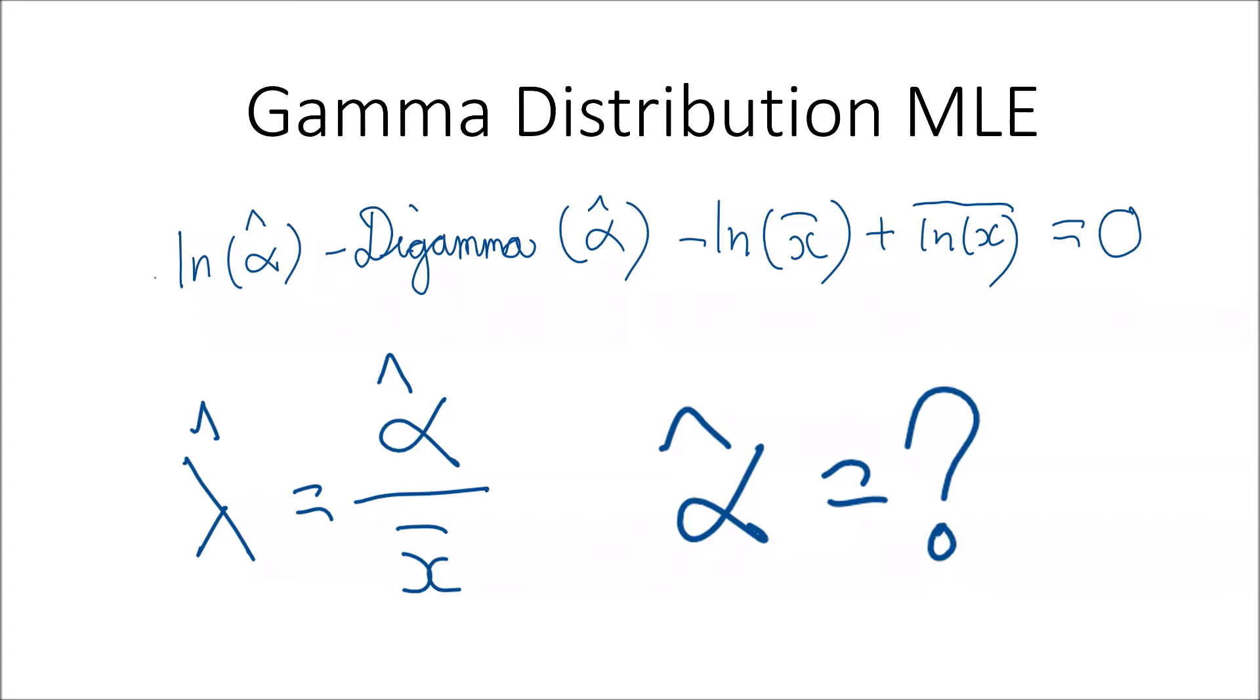But when we tried to take the partial derivative of the log likelihood function with respect to alpha hat, we arrived at this equation. And we couldn't simplify it any further because we needed to solve for alpha hat. This function is not something that we can easily do by hand. So that's where we ended the last video, and how we will do this will be shown to you in this video.